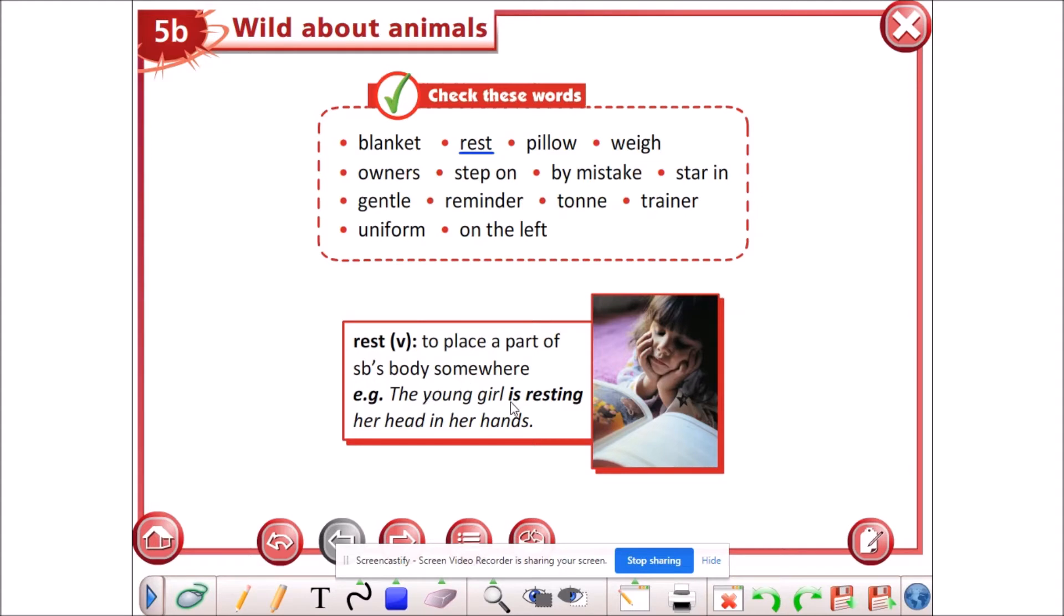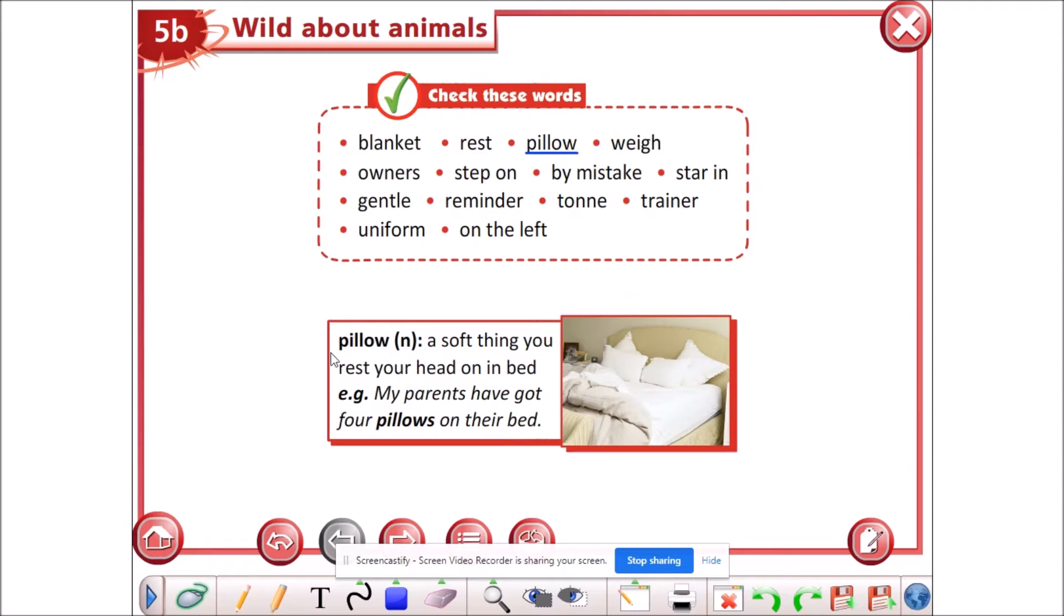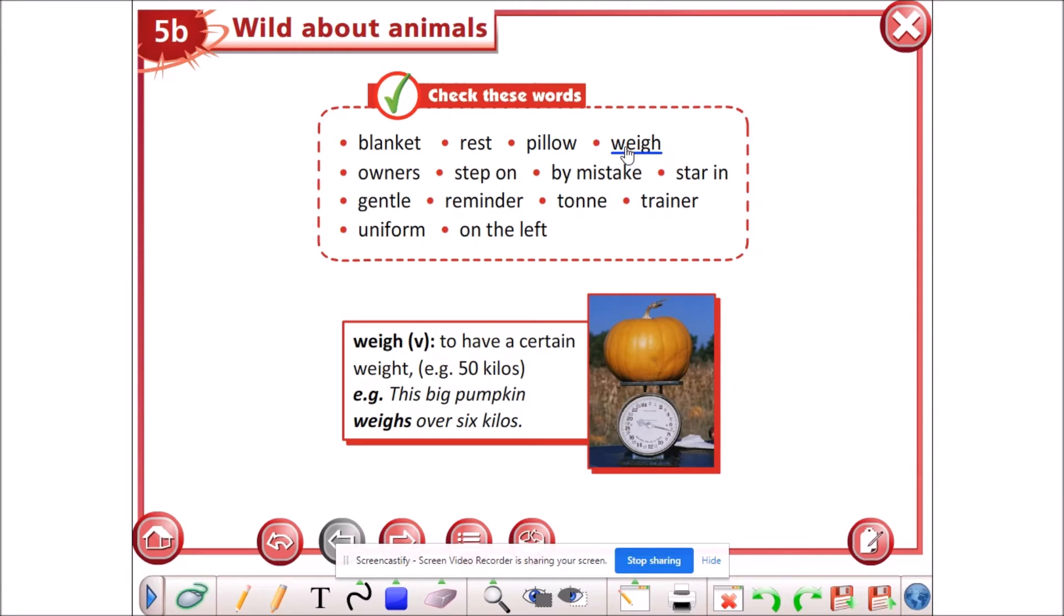Pillow is a noun. I've told you that this letter N means the word is a noun. It is a soft thing you rest your head on in bed. For example, my parents have got four pillows on their bed.